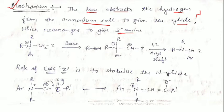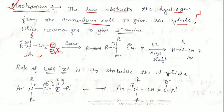Here we have taken this quaternary ammonium salt. These two are alkyl groups, this is an aryl group, and this is a methylene group. Here Z is an electron withdrawing group. Z kya hai — ek electron withdrawing group hai. Humne iska function kya hai, kyun humne yeh electron withdrawing group liya hai — isko hum next padhenge.